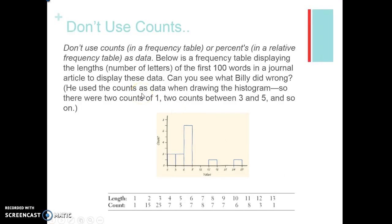I know that this slide can be a little bit confusing. Just make sure that you don't use counts in a frequency table or percents in a relative frequency table as data. Here's a frequency table displaying the lengths of the number of letters of the first 100 words in a journal article. So this is basically saying the length was one, there was a count of one. The length was two words, there was 15 of those words. Three words, there were 25 of those words. Now if you take a look at the histogram, what did he do wrong? What did Billy do wrong? He used the counts as data. So basically what he did, if you're looking between zero and three, he said, how many are between zero and three words? He said one, two, three. There was only three of them. How many between six and nine? There was one, two, three. He used the counts in order to put them into the bins. So just be careful with that, that you're drawing them correctly.